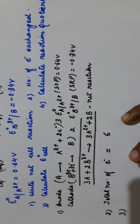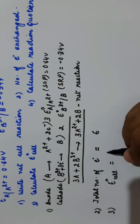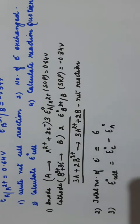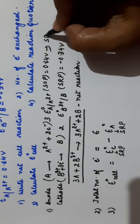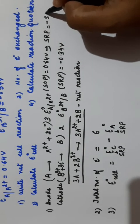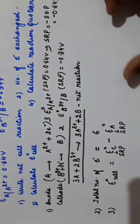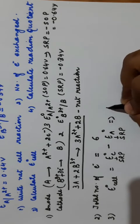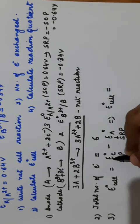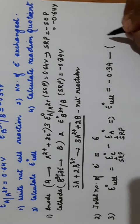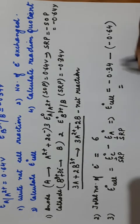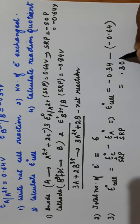Third part: calculate E naught cell. E naught cell = E cathode − E anode. E cathode is −0.34 V. The standard reduction potential of anode is −0.64 V (since the SOP was +0.64 V, the SRP is −0.64 V). So E naught cell = −0.34 − (−0.64) = +0.30 volt.